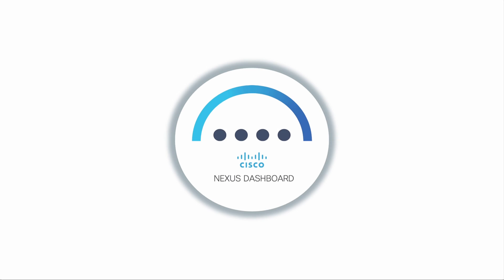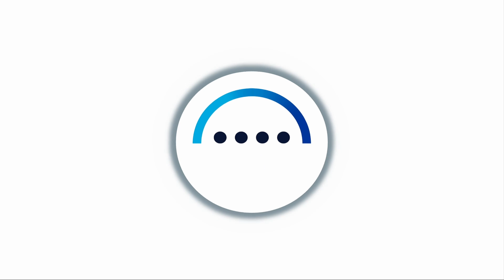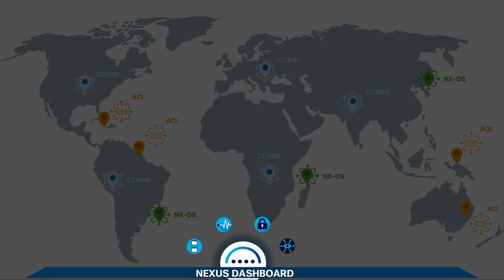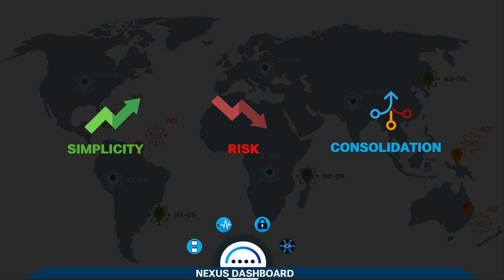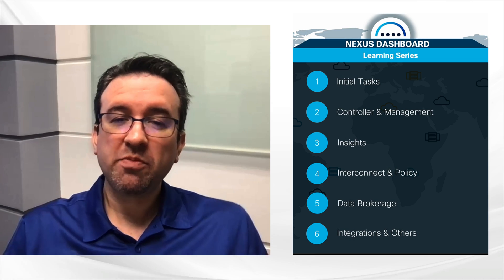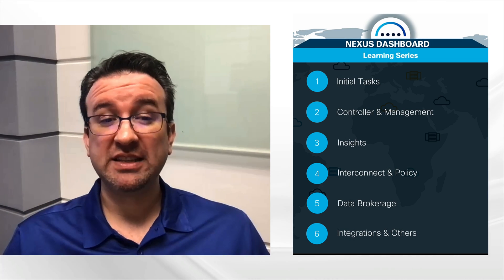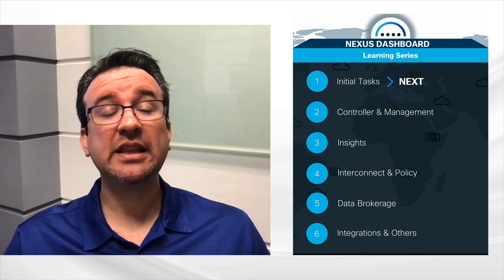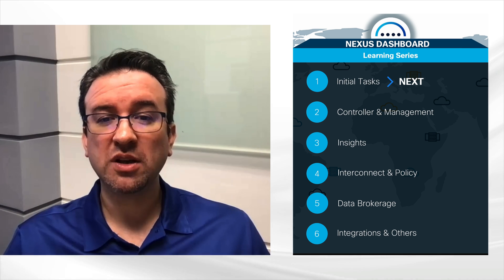With Cisco Nexus Dashboard, you get a unified network operations view across all your sites, clouds, and services — delivering unprecedented simplicity, reducing risk, and consolidating multiple operational tools. Let us show you how automation and insights can make a difference in how you manage, monitor, and troubleshoot your hybrid cloud networks, integrating Cisco and third-party solutions from a single pane of glass. Let's move on and get started with the series.